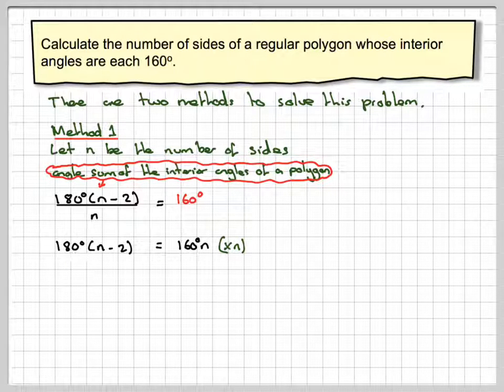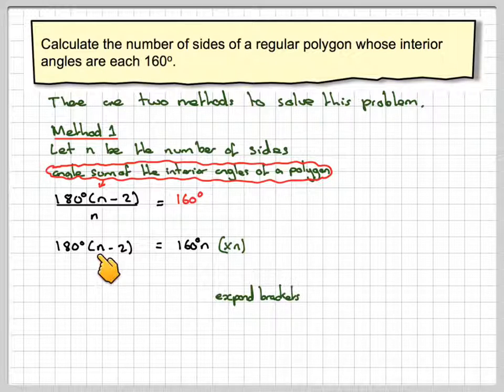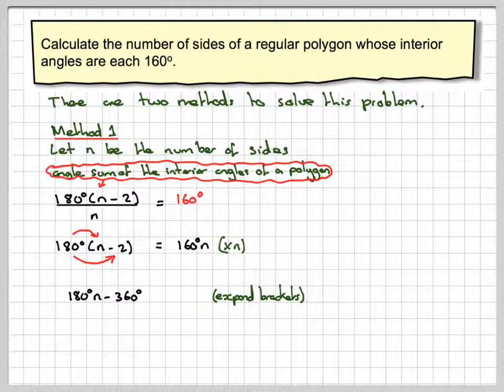Next, we need to expand the brackets. So expanding the brackets, 180 times n gives me 180n. 180 times minus 2 gives me minus 360. That's still equal to 160n. Notice we keep my equal signs in a straight line.